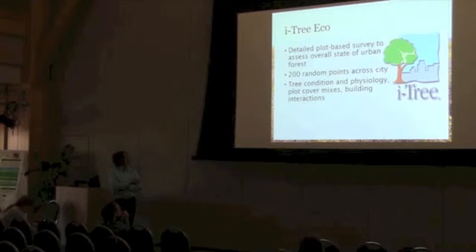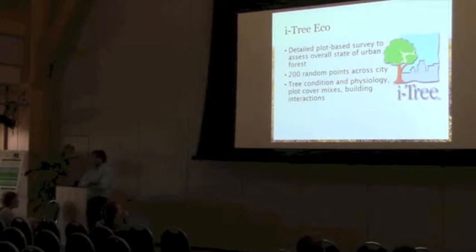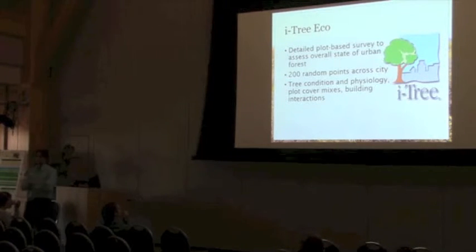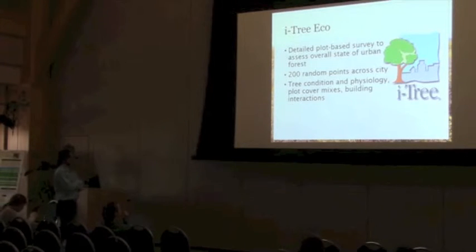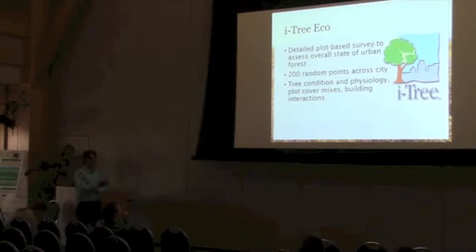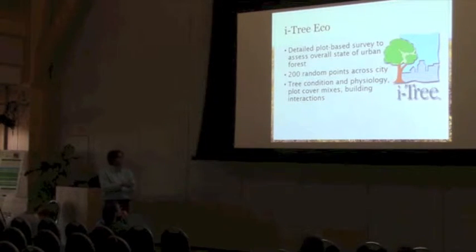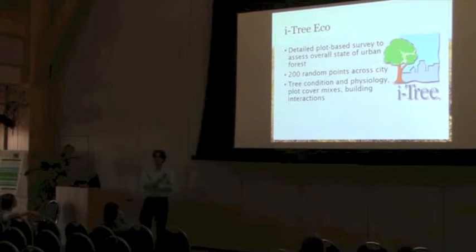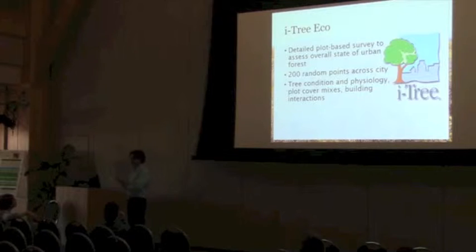We used 200 random points across the city as a sampling frame. These fell wherever they fell — it could be in the middle of the Winooski River, it could be in somebody's backyard, it could be in an industrial parking lot. But all of that was important. We would have students going out to spots with no trees, and that matters too — that's where we're going to look at how these forests are changing.